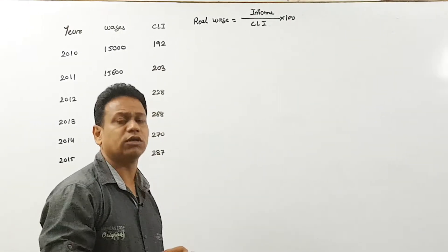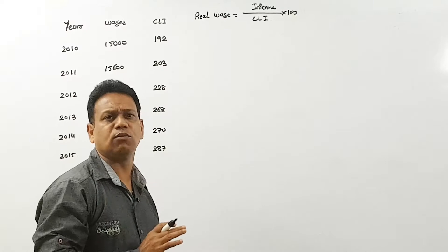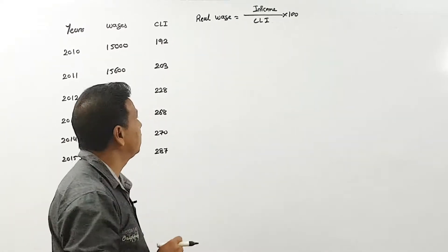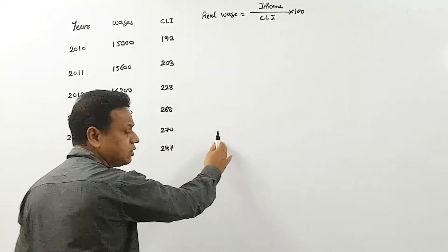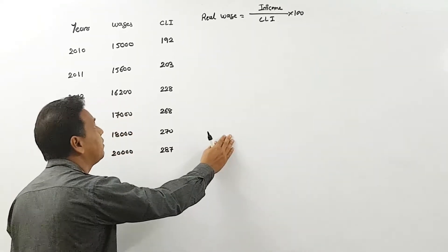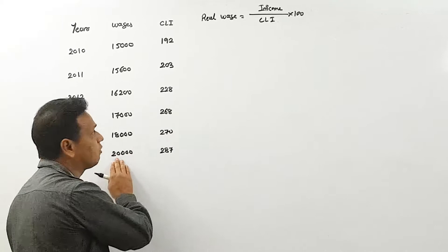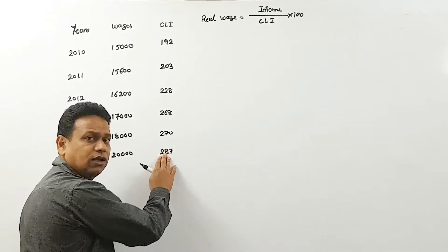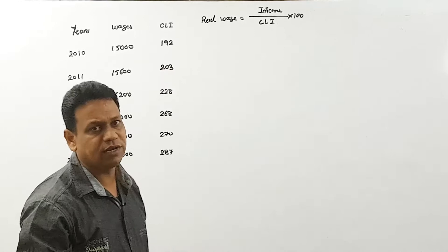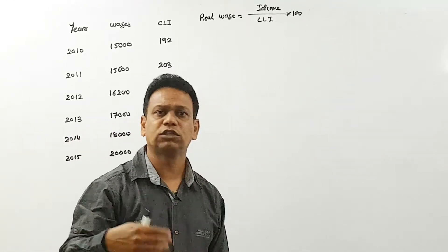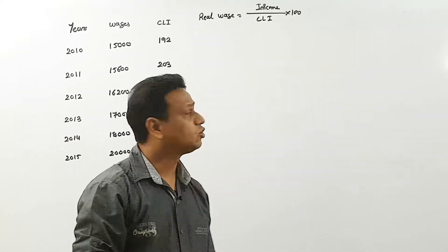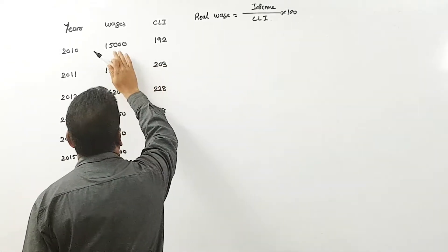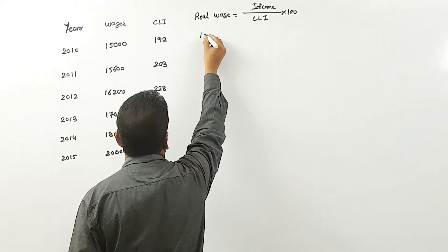This kind of example is very important — they ask it in the board exam. Sometimes they ask to find out real wages; sometimes the real wages and wages are available and they want you to find out the CLI. So any two things are available and we have to find out the third missing one.